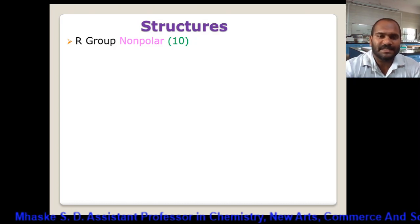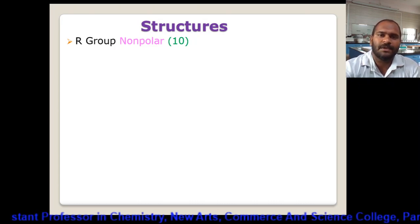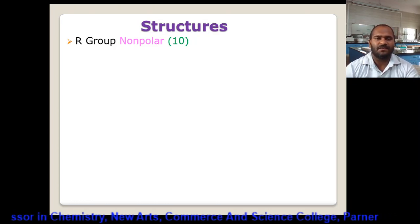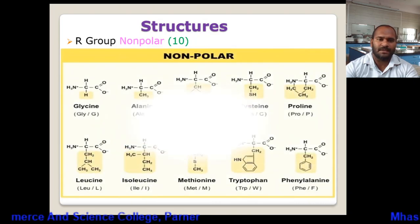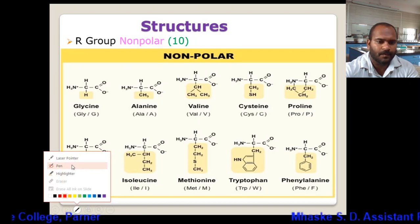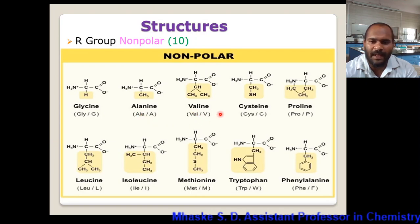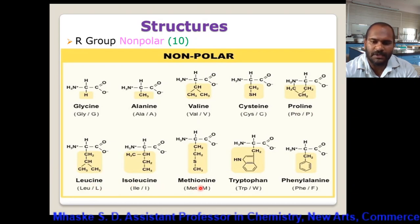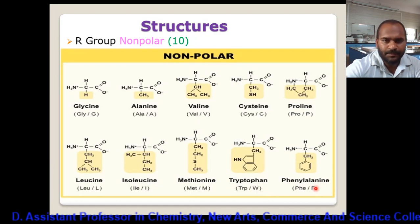Continuing with the previous lecture on classification of amino acids. Amino acids on the basis of their R group are classified into four classes. The first class is R group with non-polar character. There are 10 amino acids here: glycine, alanine, valine, cysteine, proline, leucine, isoleucine, methionine, tryptophan, and phenylalanine.